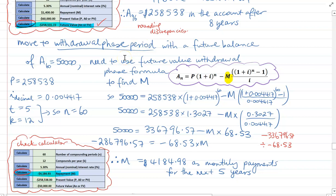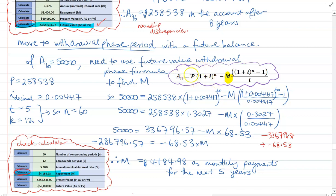Moving to the withdrawal phase: she's withdrawing for five years until the balance gets down to $50,000. We use the future value withdrawal phase formula — the amount still earning interest, minus the payments being taken out. Substituting in those values with the balance from the deposit phase as principal, decimal interest rate, and 60 compounding periods for five years, we want to end up with an account balance of $50,000. Solving for M, you should end up with monthly payments of $4,184.98.